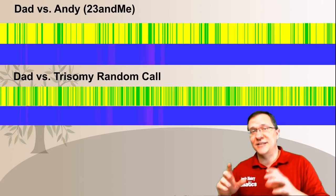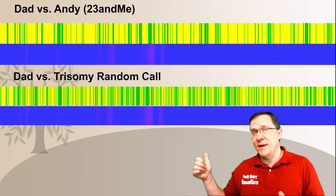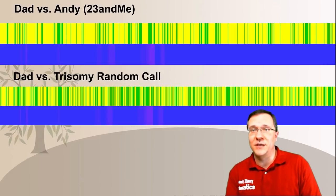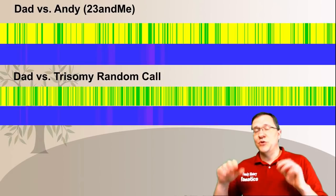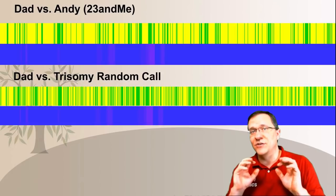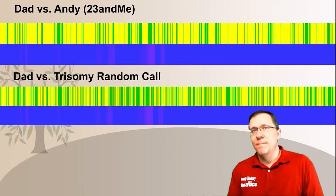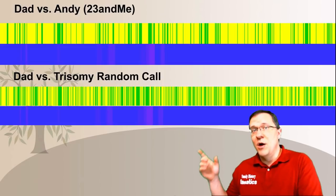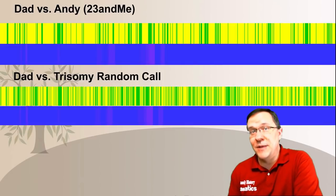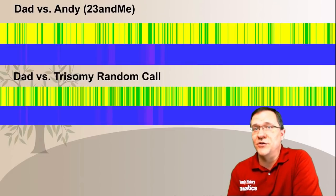Let me take this kit and compare it to my father. The major difference between the 23andMe kit comparison and my random trisomy kit comparison is that with the 23andMe kit, you can see that I'm a half match across the entire chromosome and there is not a lot of green throughout the chromosome. But with the trisomy kit, it's still a half match across the chromosome, but there's a lot more green because in many cases I'm pulling both of my father's SNPs rather than just one of his SNPs.